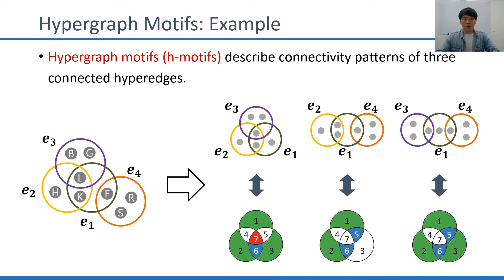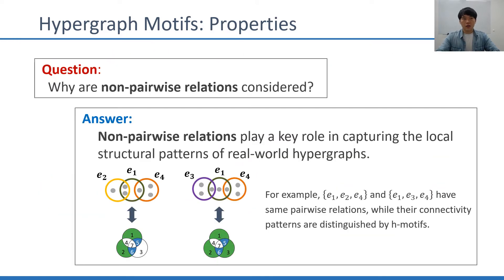Let's see an example. Given a hypergraph with four hyperedges as in the figure, there exist three instances of three connected hyperedges. Their connectivity patterns are distinguished by different H-motifs. Some careful people might ask why non-pairwise intersections, such as the intersection of three connected hyperedges, should be considered. The answer is that non-pairwise intersections play a key role in capturing local structural patterns in real-world hypergraphs. For example, two instances of three connected hyperedges in the figure have the same pairwise intersections; however, they are distinguished by H-motifs where non-pairwise intersections are considered.